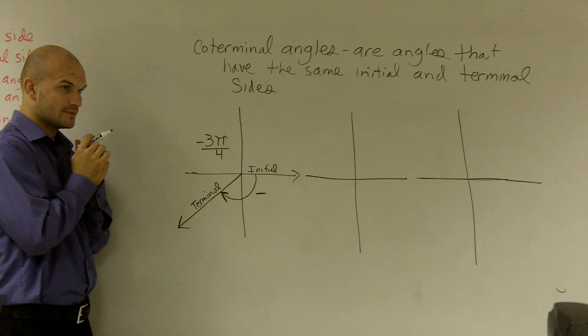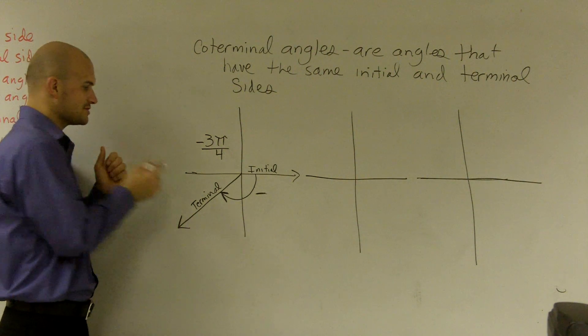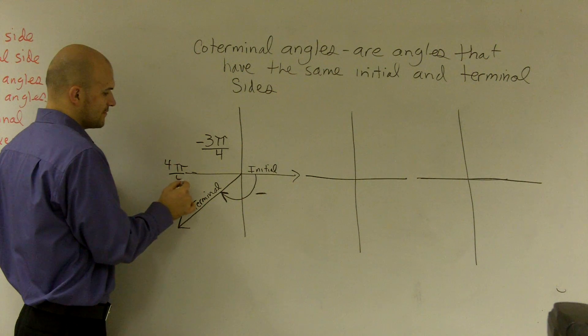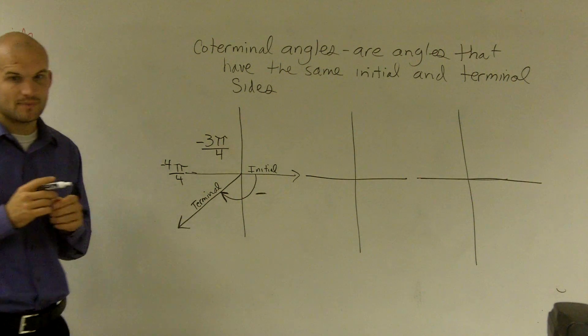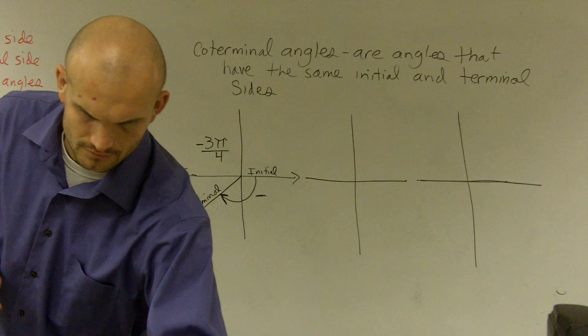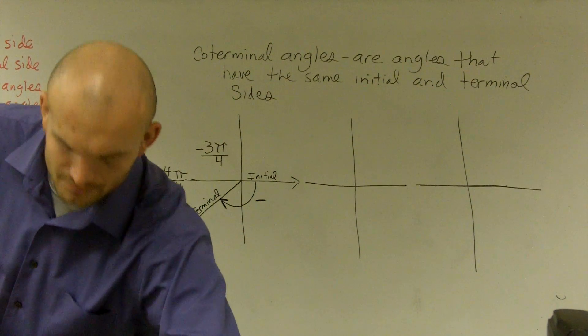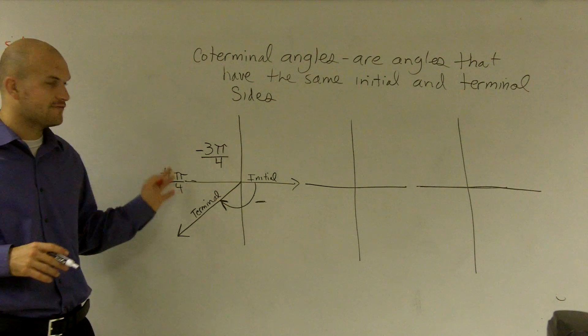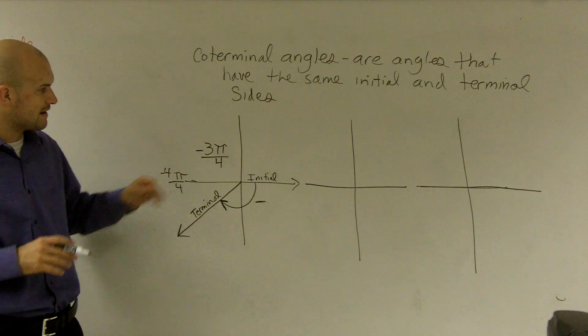The next thing we want to make sure we're concerned with is, remember, halfway around here is π. So this would be 4π over 4, or like the negative π. And this would be negative 4π over 4, all right, as we're going around this direction.